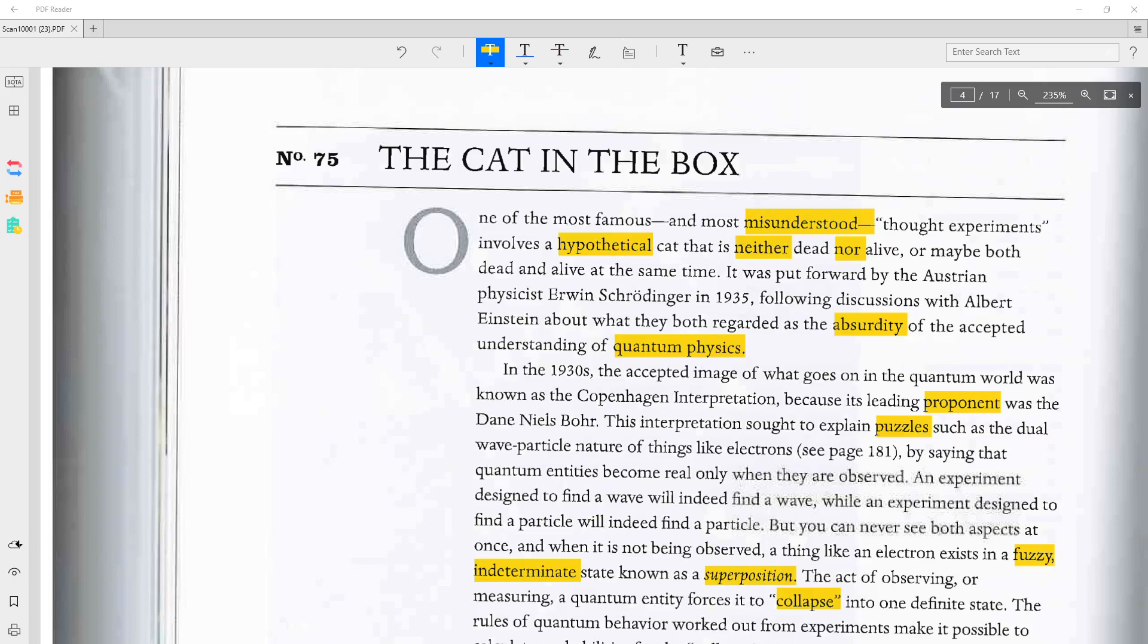In the 1930s, the accepted image of what goes on in the quantum world was known as the Copenhagen Interpretation, because its leading proponent was the Dane Niels Bohr. This interpretation sought to explain puzzles such as the dual-wave-particle nature of things like electrons.